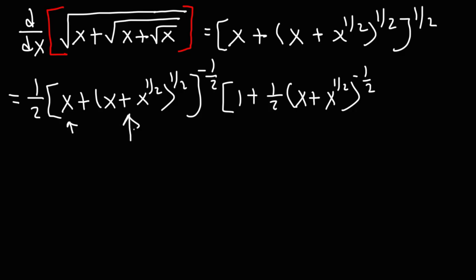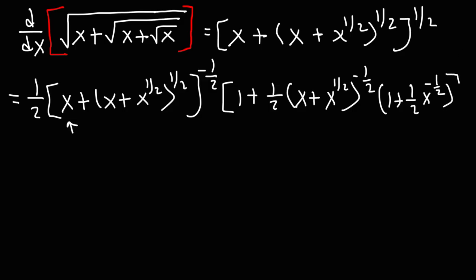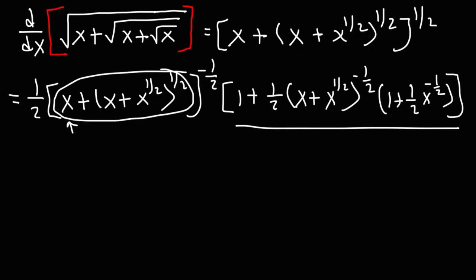We'll need to find the derivative of the inside function. The derivative of x is one. And the derivative of x to the half — we need to use the power rule again — so it's going to be one half x to the minus one half. All of this represents the derivative of the inside function.